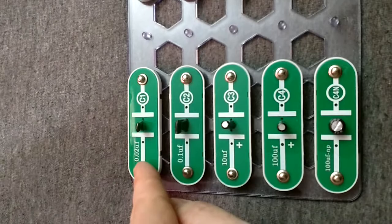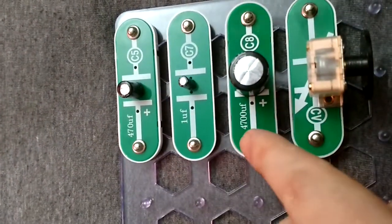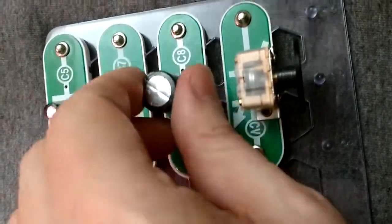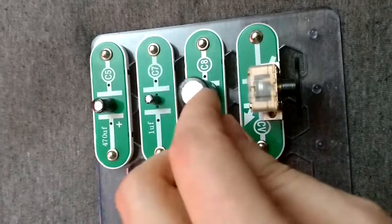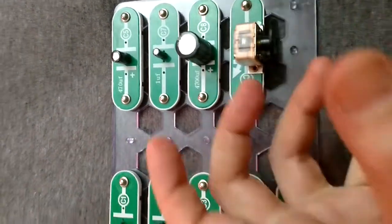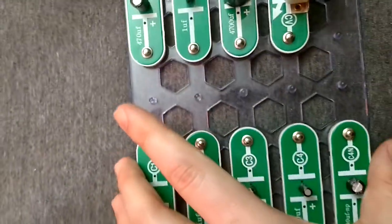This one is a 0.02 microfarad, and they go all the way up here to 4700 microfarad. That's a big old chunky boy right there, but these things can get huge, like the ones on my air conditioner, about the size of a soda can.